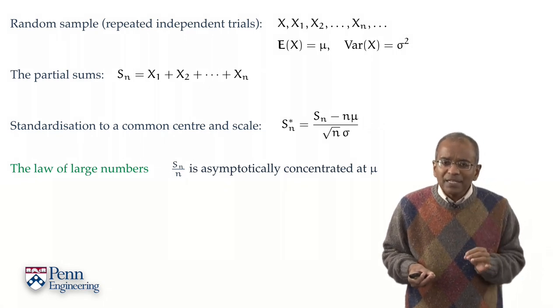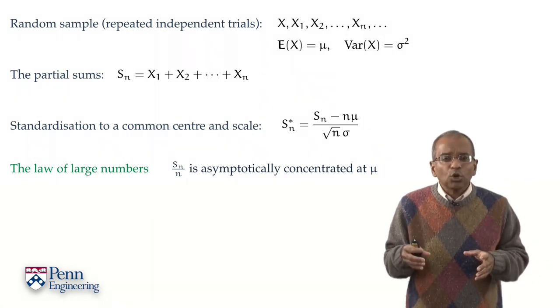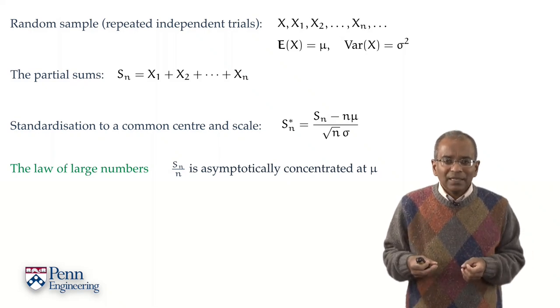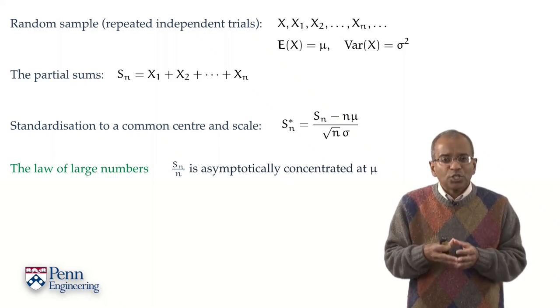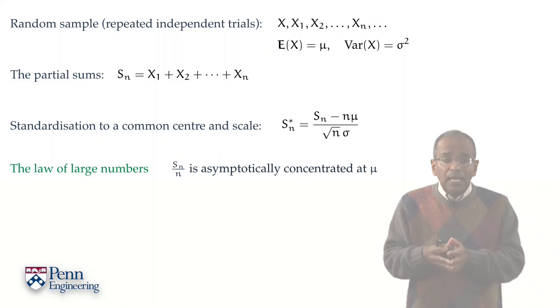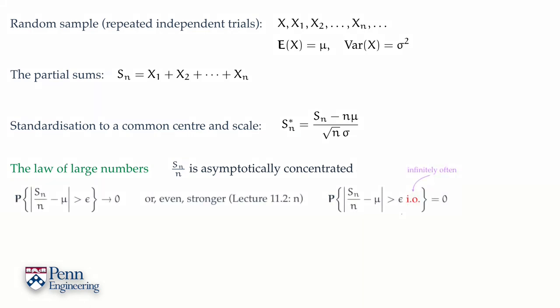What does this mean? Well, we can dress it up by talking about deviations from the center. And in fact, the strong law of large numbers of Kolmogorov says that the probability that Sₙ over n, the sample mean, deviates from its expected value by epsilon or more goes to zero.